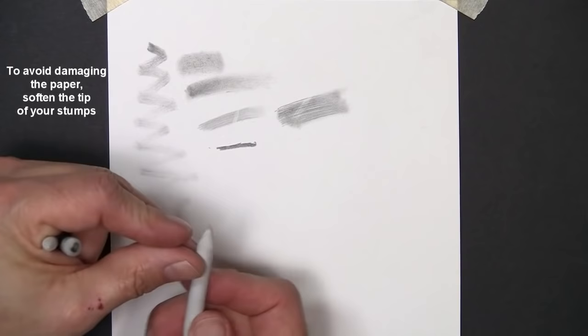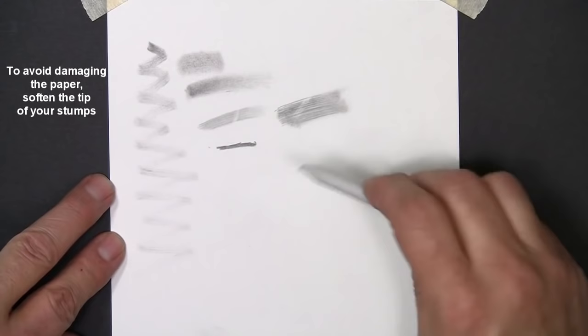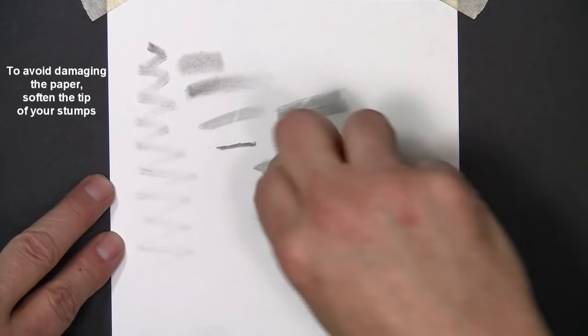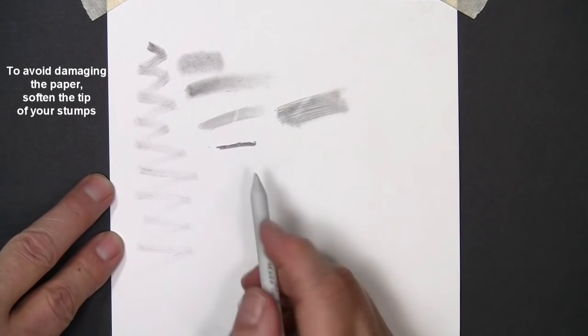Now don't do it on your paper like I'm doing here. I just want you to be able to see it on the camera. Now once I get that tip much softer, I'll be able to blend without it damaging the paper as much. I just can't push as hard because it's a little bit more pliable on the end.